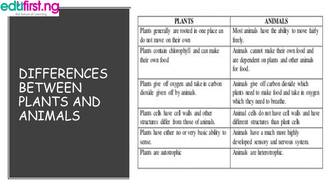Plants give off oxygen and take in carbon dioxide given up by animals. Animals give off carbon dioxide, which plants need to make food, and take in oxygen in order to breathe. Plant cells have cell walls and structures that differ from those of animals, while animal cells do not have cell walls and have different structures than plant cells.